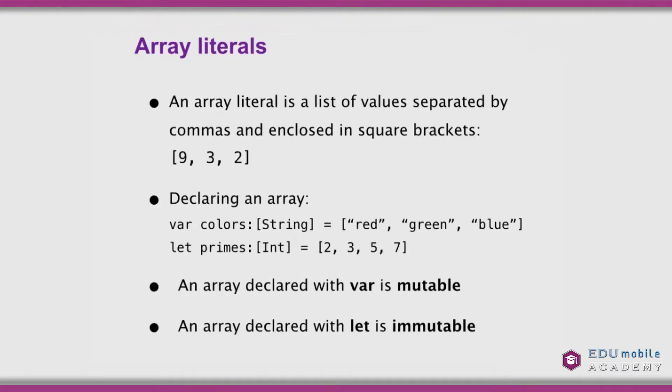An array literal is a collection of values separated by commas and enclosed in square brackets. Here we have an array that would be inferred to be of type Int — nine, three, and two. These are ordered. The first element is nine, the second is three, and the third is two. Array subscripts are zero-based, so array[0] is nine, and so forth.